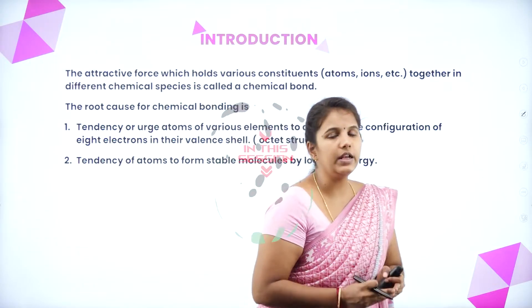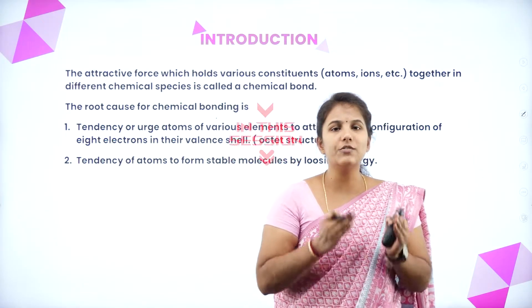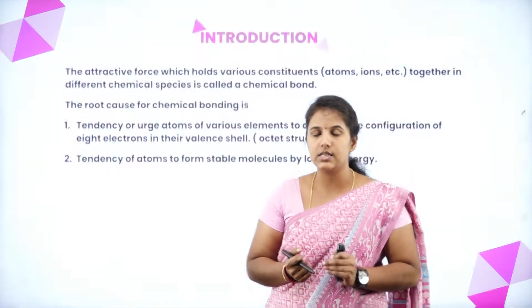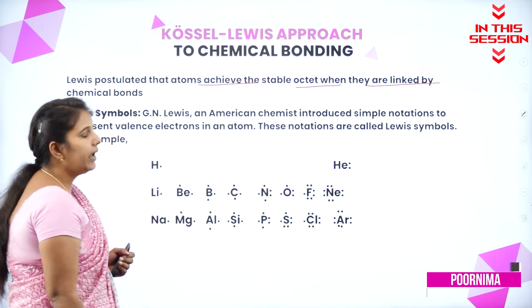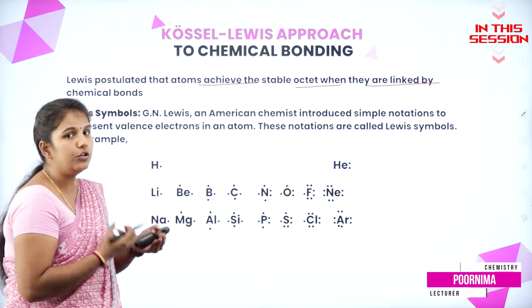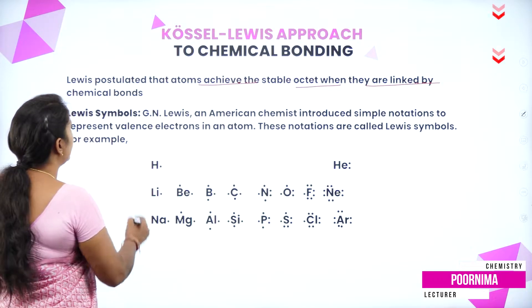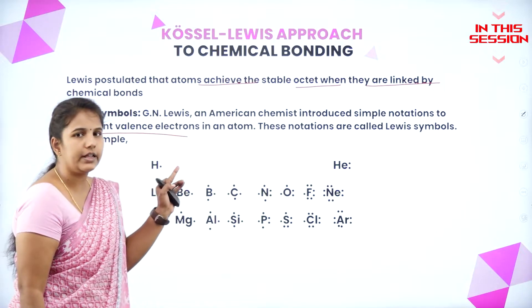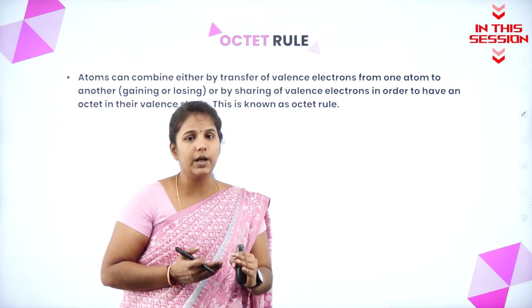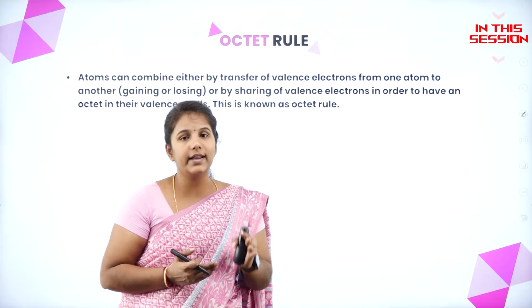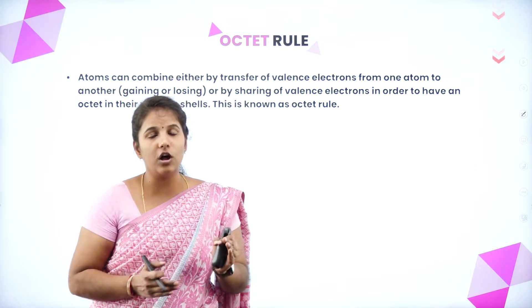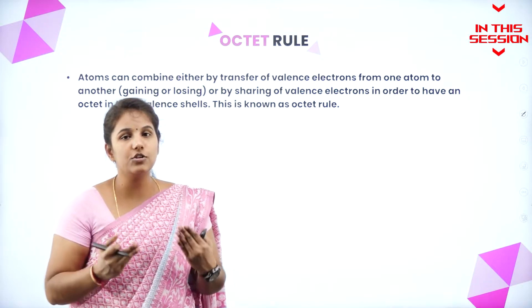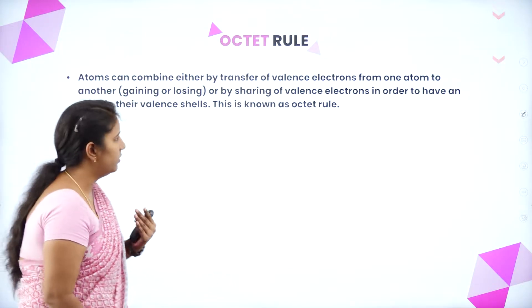Chemical bond is a kind of force of attraction between the constituents. Lewis is a chemist who introduced a new notation for representing the valence electron in an atom. The tendency of an atom to attain the eighth electron in its valence shell is known as the octet rule.